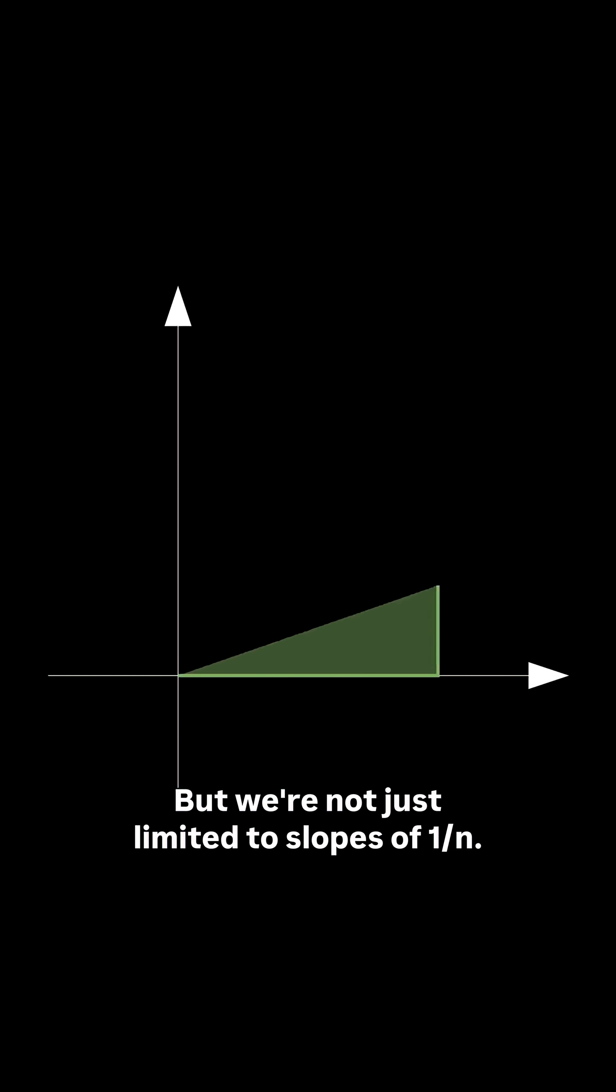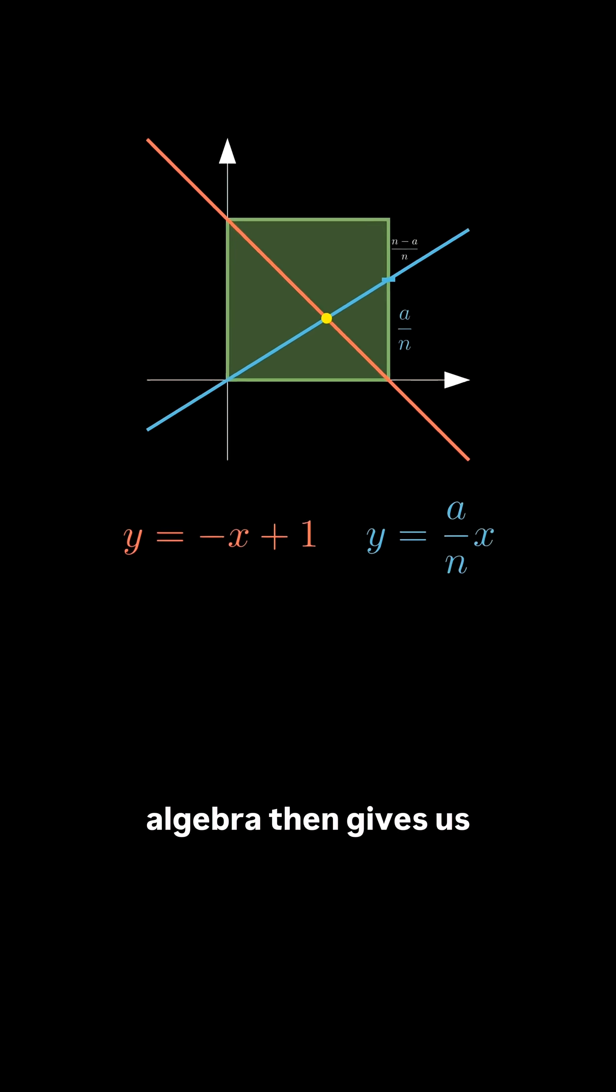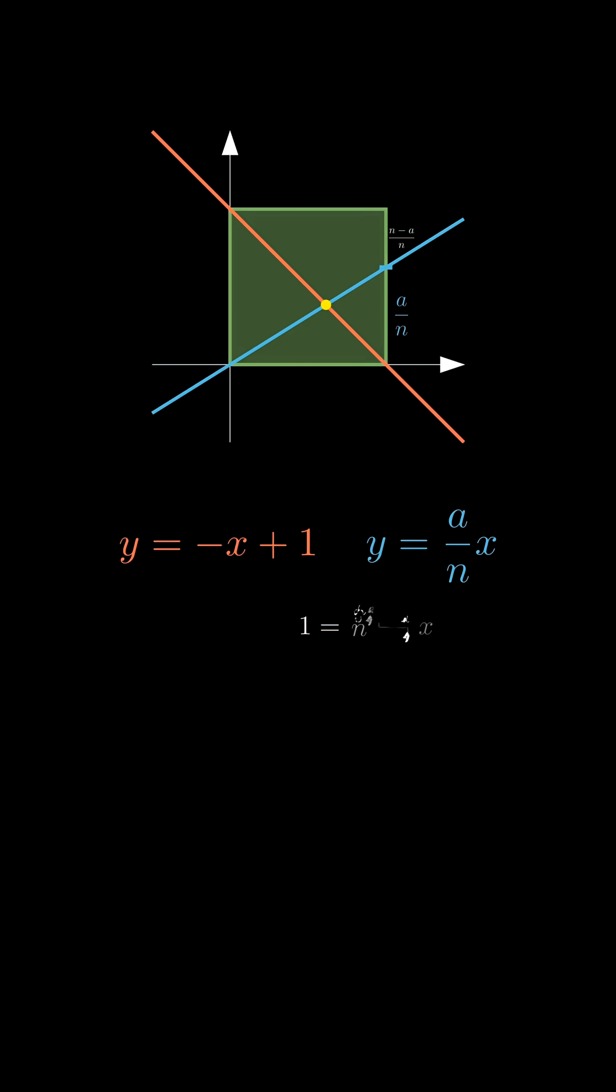But we're not just limited to slopes of 1 over n. If we use a more general slope of a over n, the algebra then gives us a denominator of n plus a.